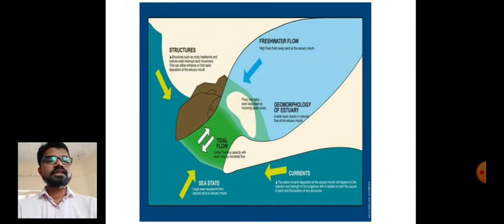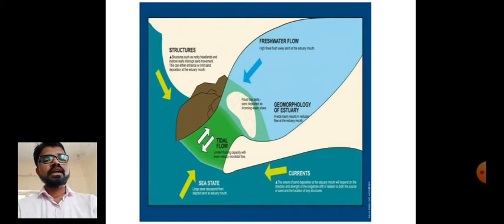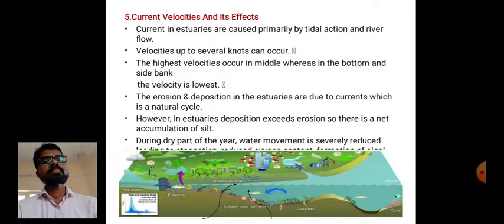We can see that where the geomorphology of the estuary meets fresh water flow and tidal flow, the anti-estuary current occurs at the surface with lower temperature, while the estuary current near the bottom has a high salt concentration. This is why temperature varies in estuaries.